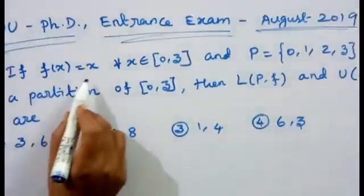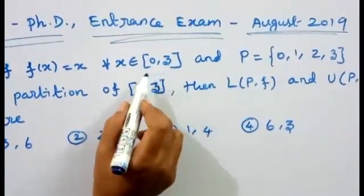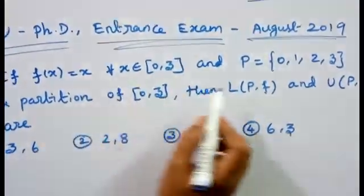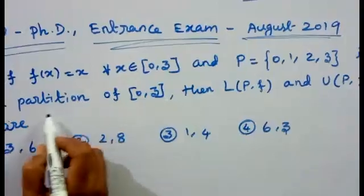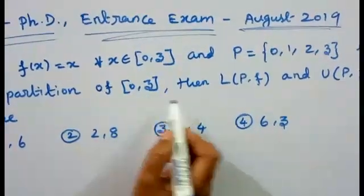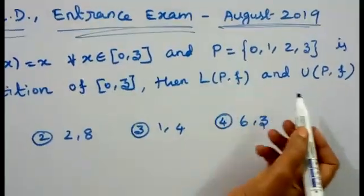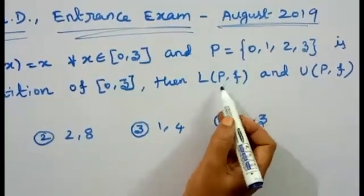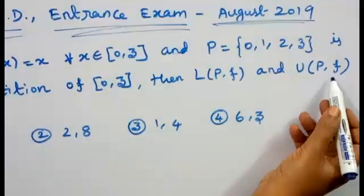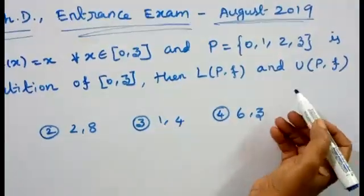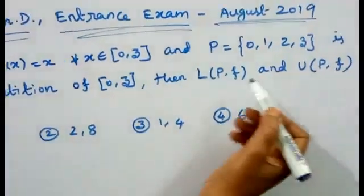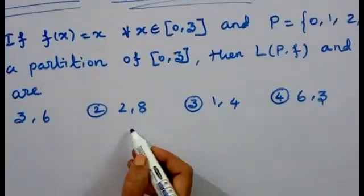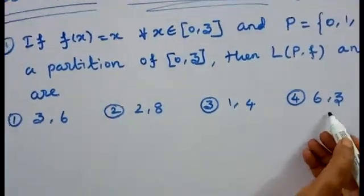If f(x) = x for all x in the closed interval [0,3], then L(P,f) is equal to the lower sum of f with respect to partition P, and U(P,f) is equal to the upper sum of f with respect to partition P — in the context of Riemann integrable functions. We will discuss 4 options: first option is (3,6), second is (2,8), third is (1,4), and last is (6,3).